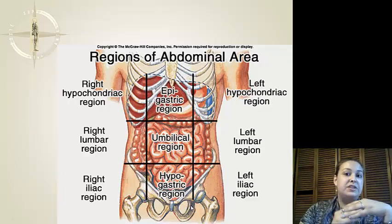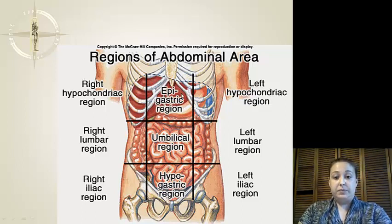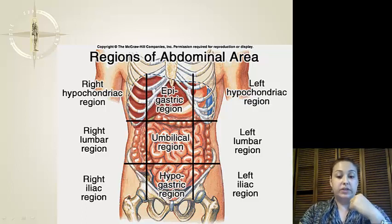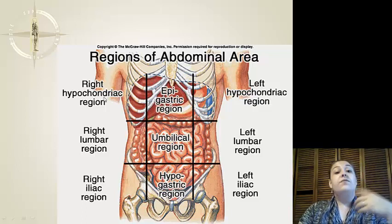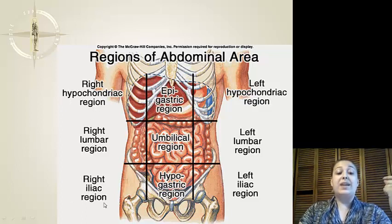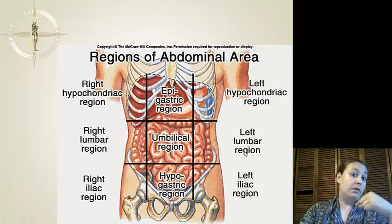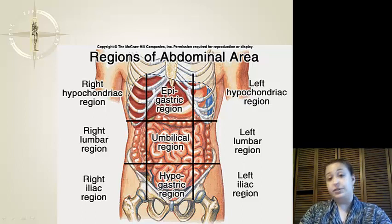Final thing: regions of the abdominal area. Going down the center, we have the epigastric region, the umbilical region, and the hypogastric region. From the right, we have the right hypochondriac region, the right lumbar region, and the right iliac region. On the left: left hypochondriac region, left lumbar region, and left iliac region.